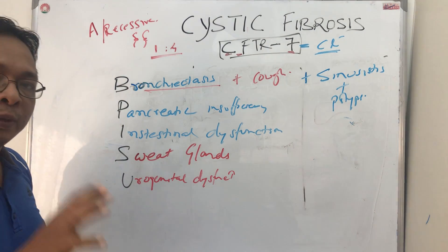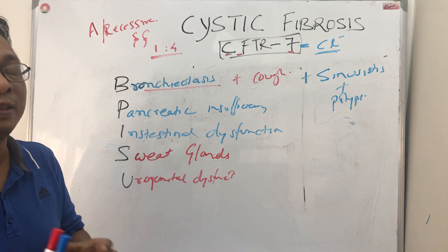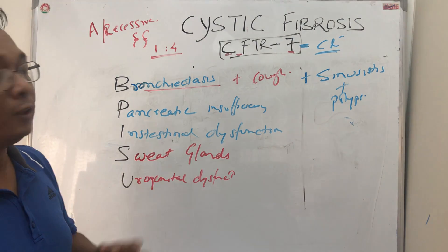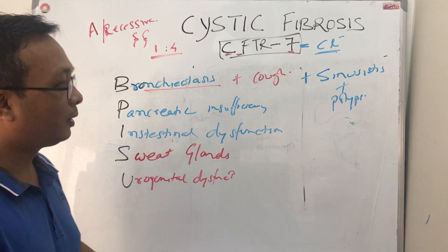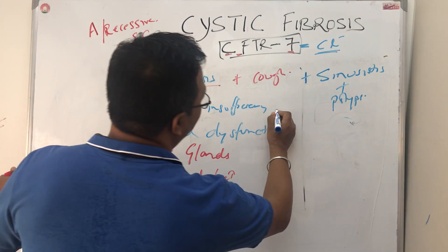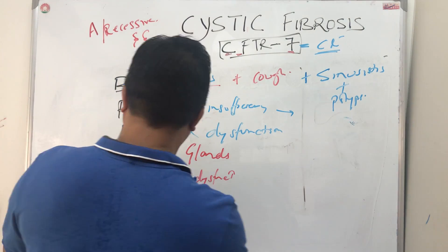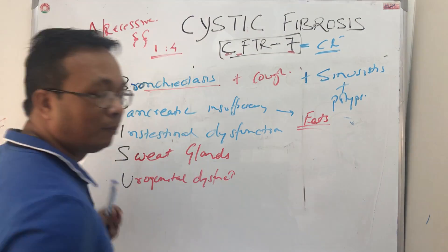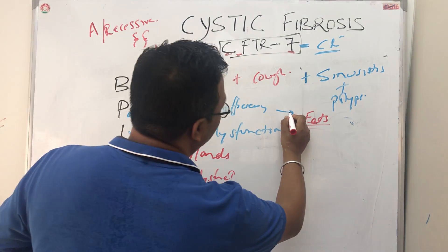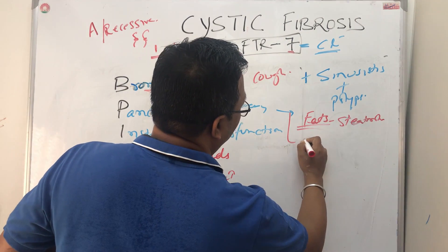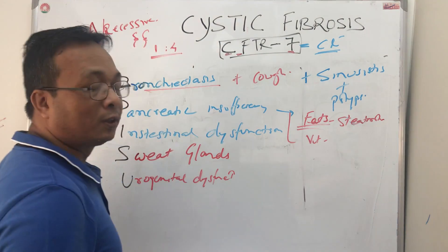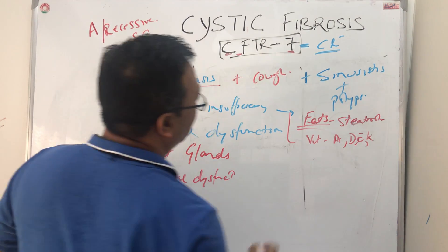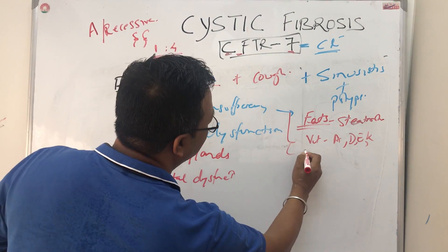Coming to P for Pancreatic insufficiency — we know that the pancreatic exocrine secretion is very powerful and is not being released from the pancreas gland. So obviously there will be symptoms of pancreatitis: pain abdomen, vitamin malabsorption, and steatorrhea are common. There is malabsorption of fats leading to steatorrhea, and vitamin malabsorption — particularly fat-soluble vitamins A, D, E, K — along with all the clinical features of pancreatitis.